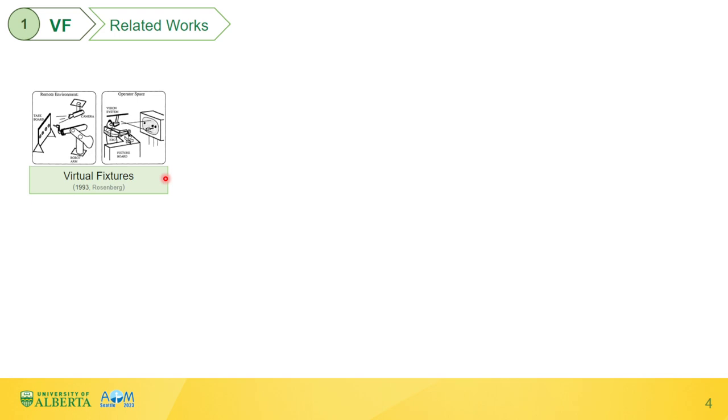Here are some related works about virtual fixture. VF was initially proposed by Rosenberg in 1993, aiming to help operators achieve better performance in teleoperation tasks like peg-in-hole. In the beginning, VFs were generated from simple regular shapes, such as a plane, a sphere, or the virtual box we saw in the video. Those VFs are relatively easy to generate by using their mathematical equations.